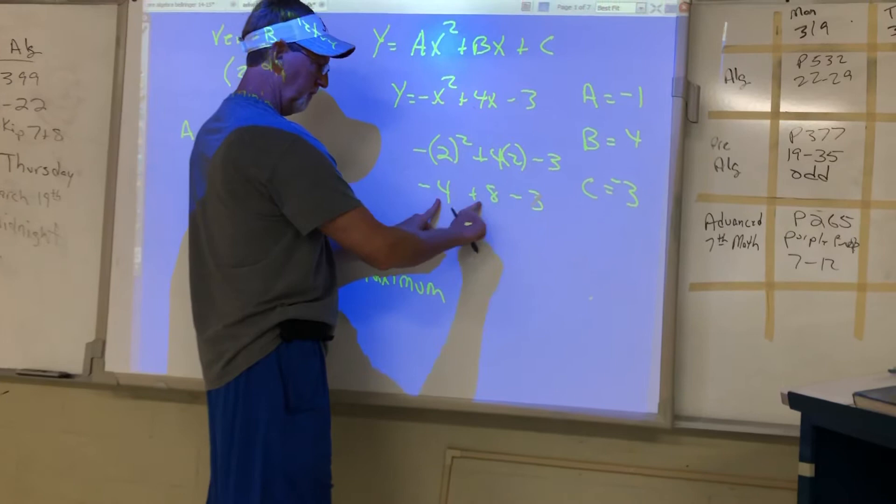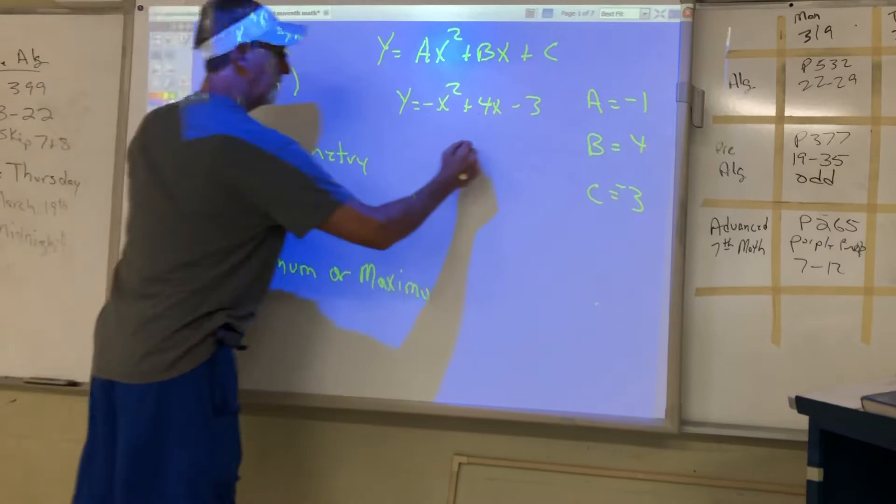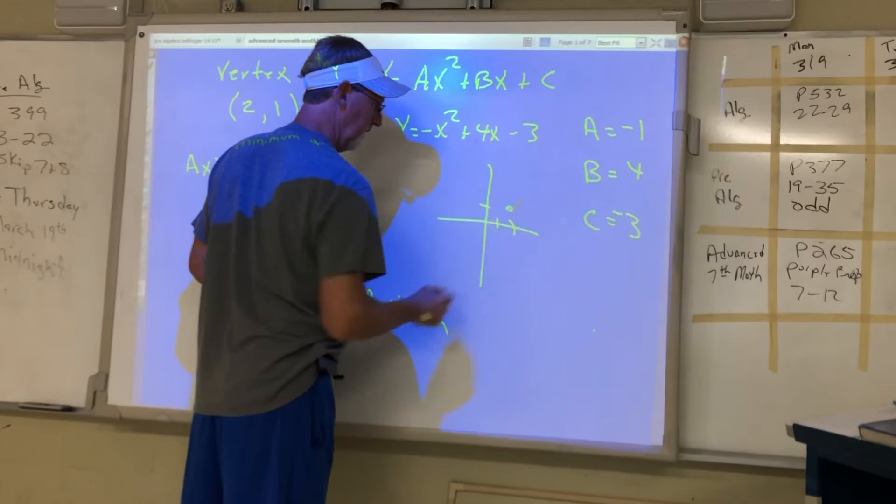So this is the vertex 2, 1. Now we'll graph the vertex. Go to right 2, go up 1. That's the vertex.